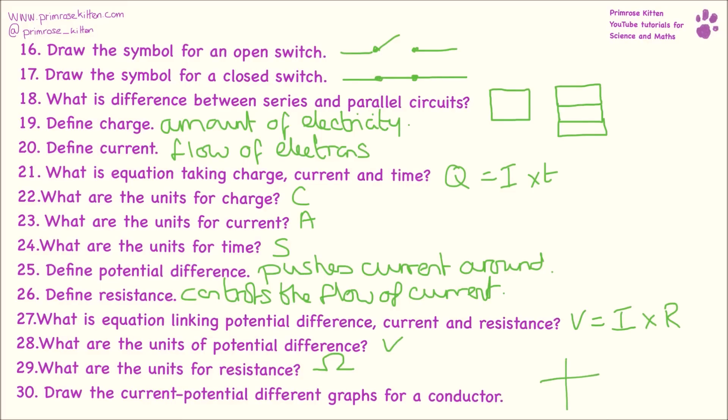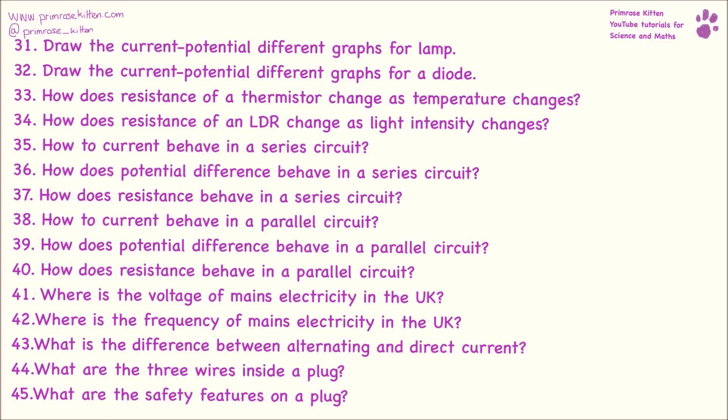Here we have our current potential difference graph. So we have potential difference and we have current. And for a conductor or a resistor it is going to be a straight line. Current potential difference graphs for a lamp. So here we have potential difference, here we have current. And this is going to be a slightly wavy line. Current potential difference graphs for a diode, potential difference, current. And because the diode will only flow in one direction it will go like this and then up again.